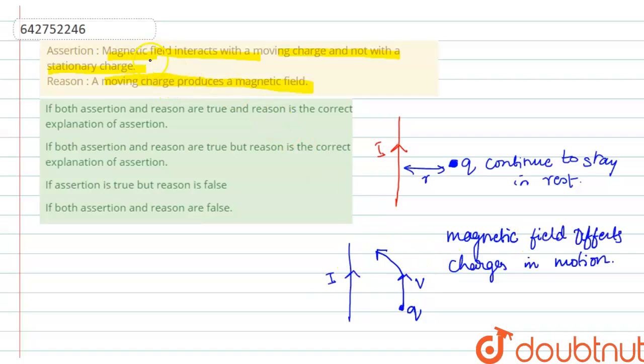And now, we have the assertion is true. That is, magnetic field interacts with the moving charge and not with the stationary charge.